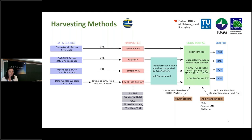On the left side, in purple, are listed the possible data sources showing how geodetic metadata can be provided. In general, it can be said that it's very important to support the metadata in a machine-readable format. I will start with the first tested harvester: the GeoNetwork harvester.